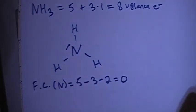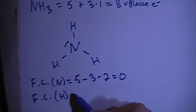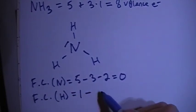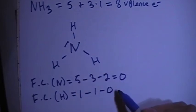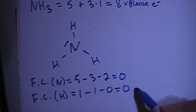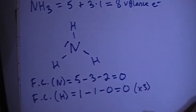And then the formal charge on one of the hydrogens, which will all be the same, is 1 valence brought in minus 1 bond minus 0 non-bonding. So that's going to give you a formal charge of 0, and that's times 3 because there's 3 of those hydrogens.